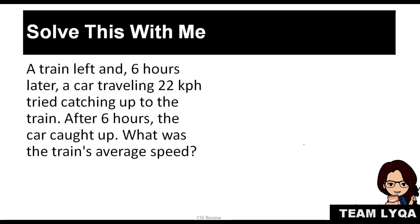Now let's change it up a bit. This is a little bit harder, but we're still looking for speed. A train left, and 6 hours later, a car traveling 22 kilometers per hour tried catching up to the train. After 6 hours, the car caught up. What was the train's average speed? Again, let's draw to make it clearer. The train left, 6 hours later a car chased it. That means if they're traveling, they must be traveling in the same direction. Because if you're chasing someone, you should be in the same direction. If this is the train at the top, it has its own SDT triangle.